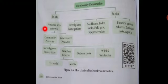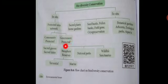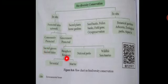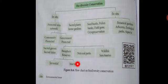In situ conservation means the protected area network, which can be classified into two types: community protected and government protected. Community protected areas include sacred groves and sacred lakes. Government protected areas include biosphere reserves, national parks, and wildlife sanctuaries. Biosphere reserves can be classified as terrestrial as well as marine.